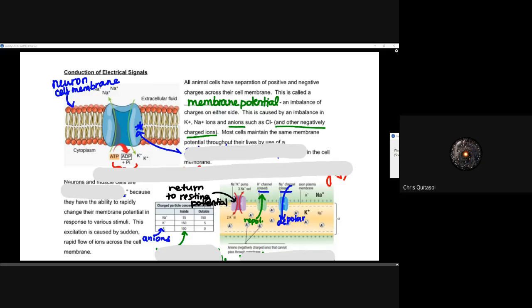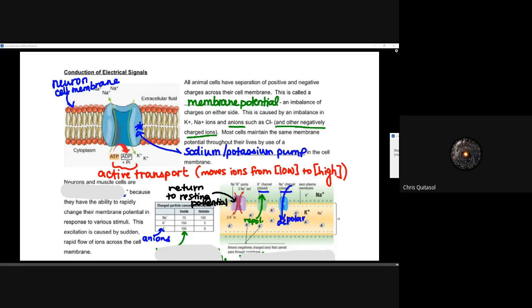This is caused by an imbalance of potassium and sodium ions, as well as anions like chlorine and other negatively charged ions, within the interstitial fluid or cytoplasm. Most cells maintain the same membrane potential throughout their lives by use of a sodium-potassium pump. This sodium-potassium pump is one of the important ways a cell — specifically neurons — will utilize ATP to maintain that membrane potential. We're looking at active transport: it's going to use ATP to move ions from low to high concentration to ensure that membrane potential is kept.